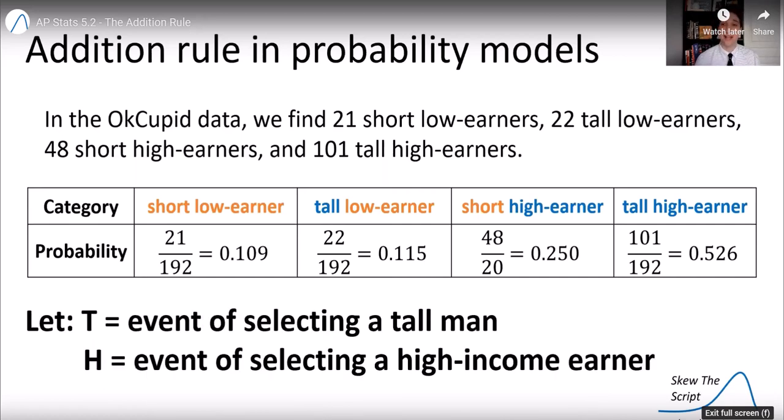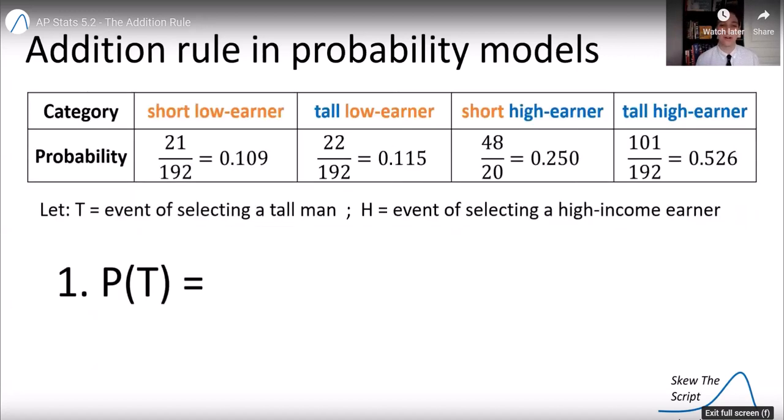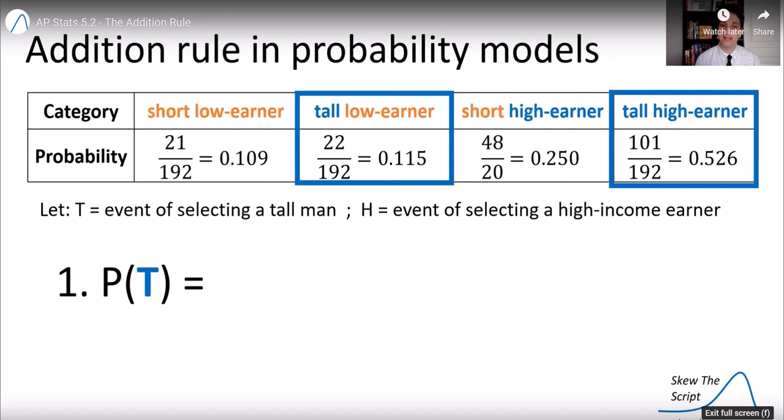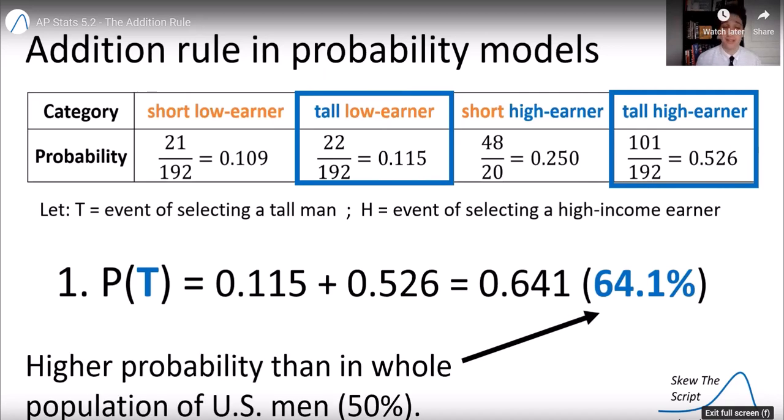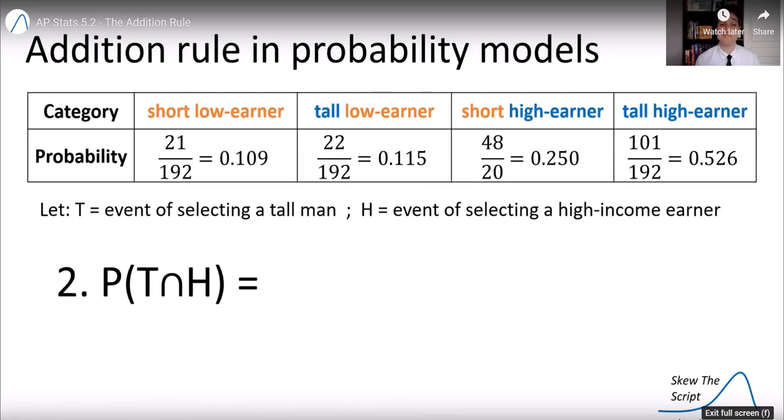So let's let T equal the event of selecting a tall man randomly from this pool and H the event of selecting a high income earner. So first, let's find the probability of selecting a tall man. Well, there were two of these categories that had tall men in it, so we're just going to add those together. We have a 64.1% chance of selecting a tall person from the OKCupid dataset. So this is a much higher probability than the population of the US as a whole, because remember, 50% should be above the median. So we're already seeing OKCupid people tend to be tall, or at least they report being tall.